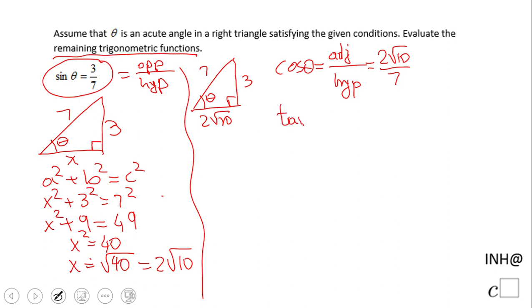Next is tangent. Tangent is opposite over adjacent, so we have 3 over 2 square root of 10. We can rationalize this, which becomes 3 square root of 10 over 20. That's it, you cannot simplify further.